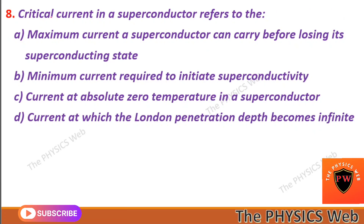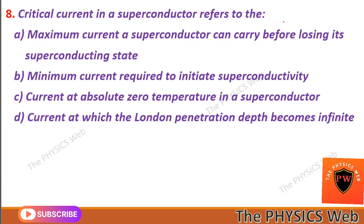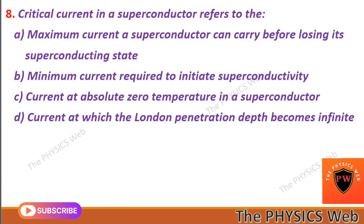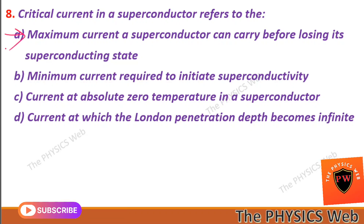Next, question eight: critical current in a superconductor refers to the maximum current a superconductor can carry before losing its superconducting state. So A is your correct option.